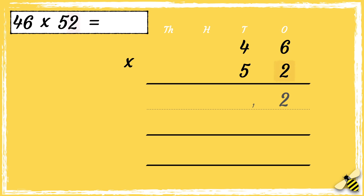Then we can multiply two by four tens — two times four is eight, and then we need to add the extra one ten at the bottom, so it's nine. Now we need to multiply five tens by six. Remember, we need to use zero as a placeholder in the ones column.